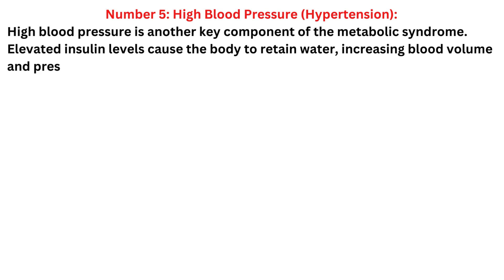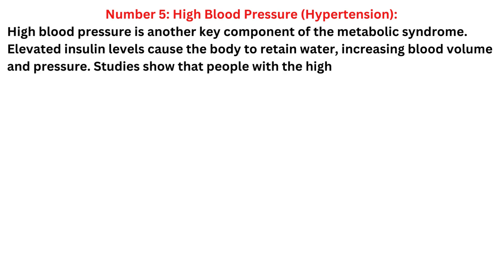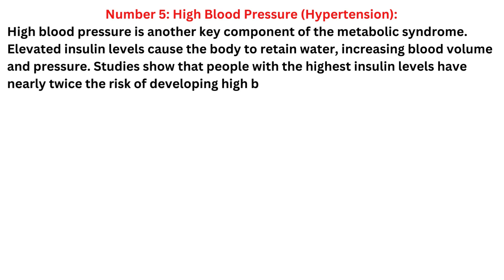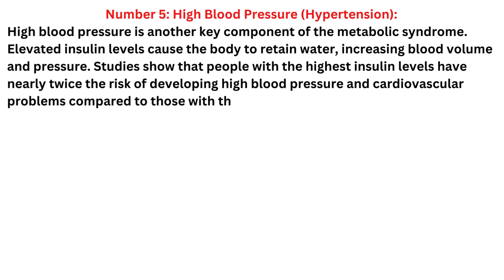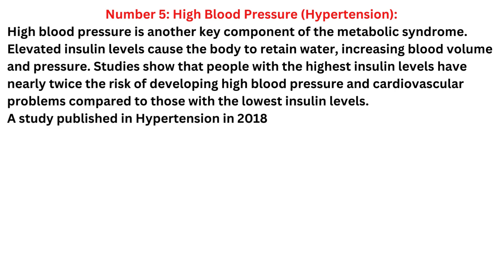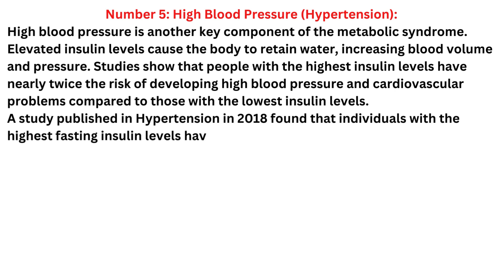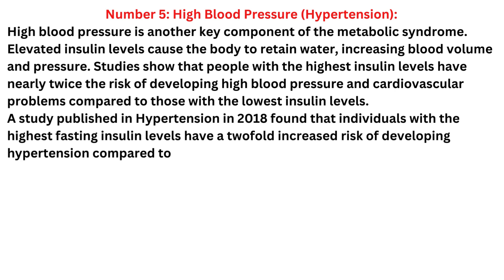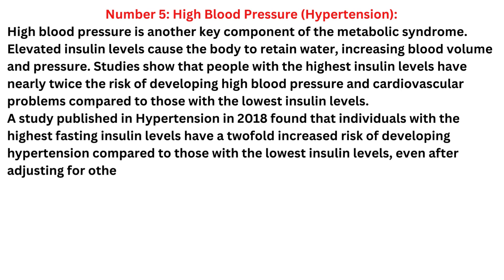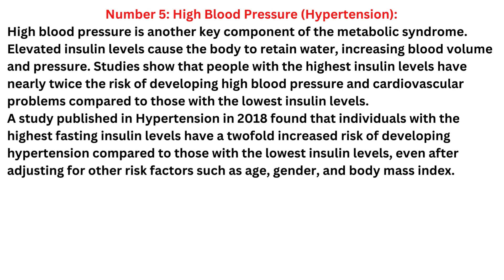Number five: high blood pressure, or hypertension. High blood pressure is another key component of metabolic syndrome. Elevated insulin levels cause the body to retain water, increasing blood volume and pressure. Studies show that people with the highest insulin levels have nearly twice the risk of developing high blood pressure and cardiovascular problems. A study published in Hypertension in 2018 found that individuals with the highest fasting insulin levels have a two-fold increased risk of developing hypertension compared to those with the lowest insulin levels, even after adjusting for age, gender, and body mass index.